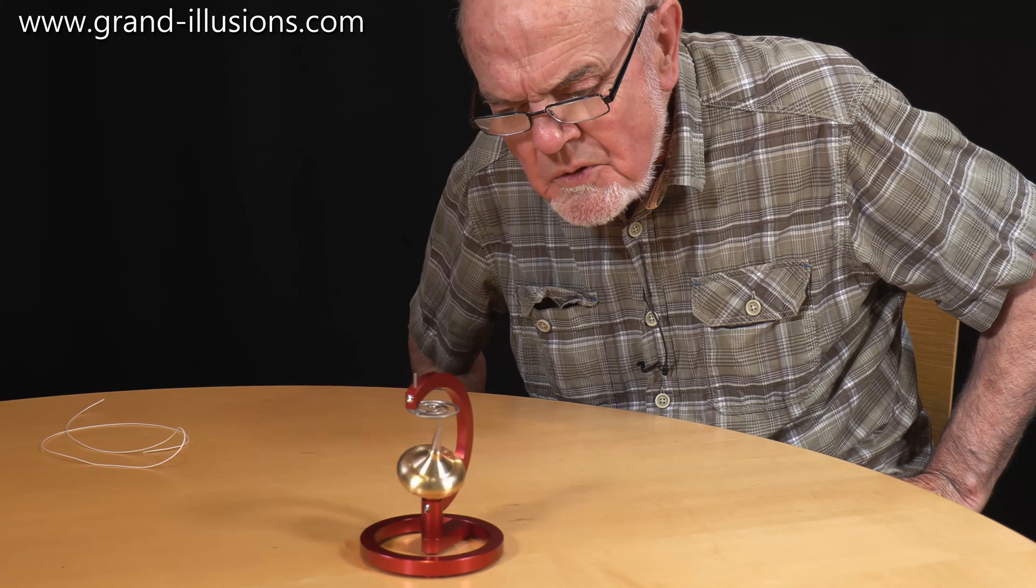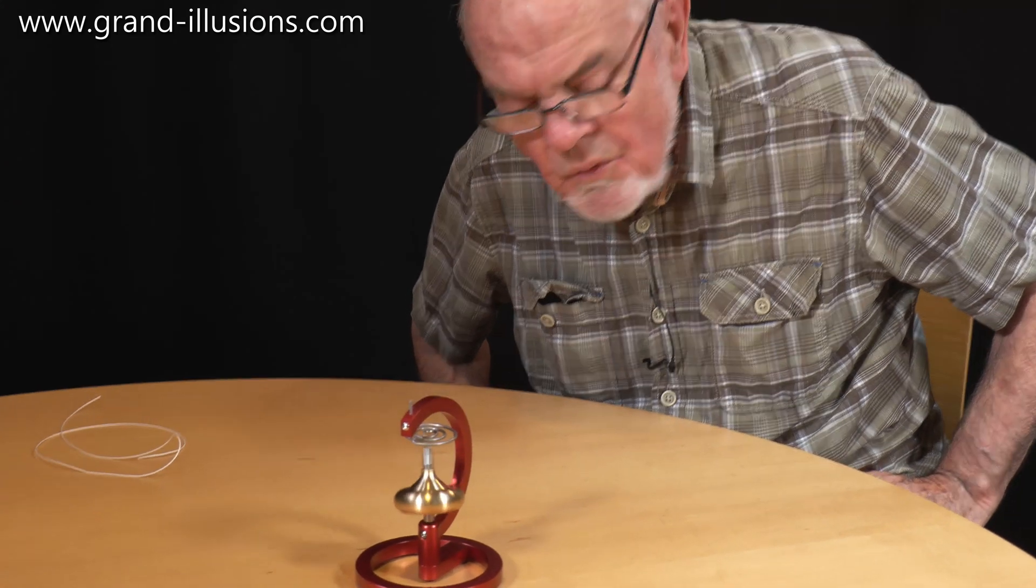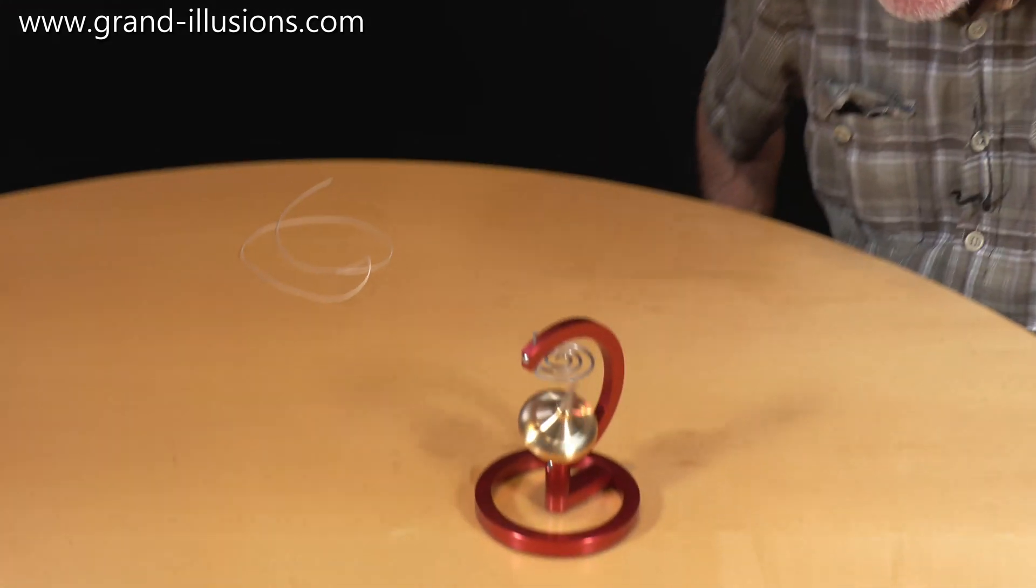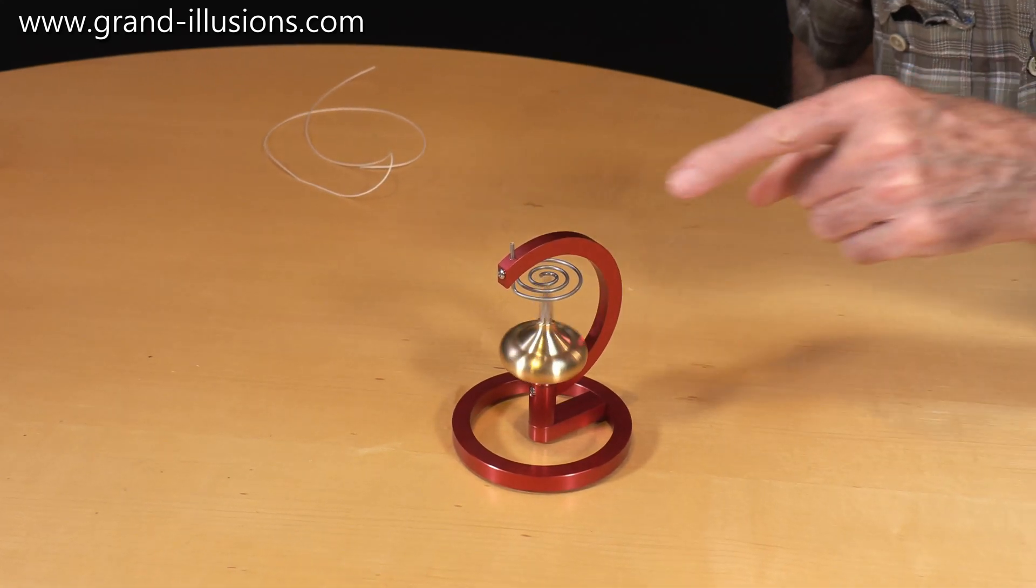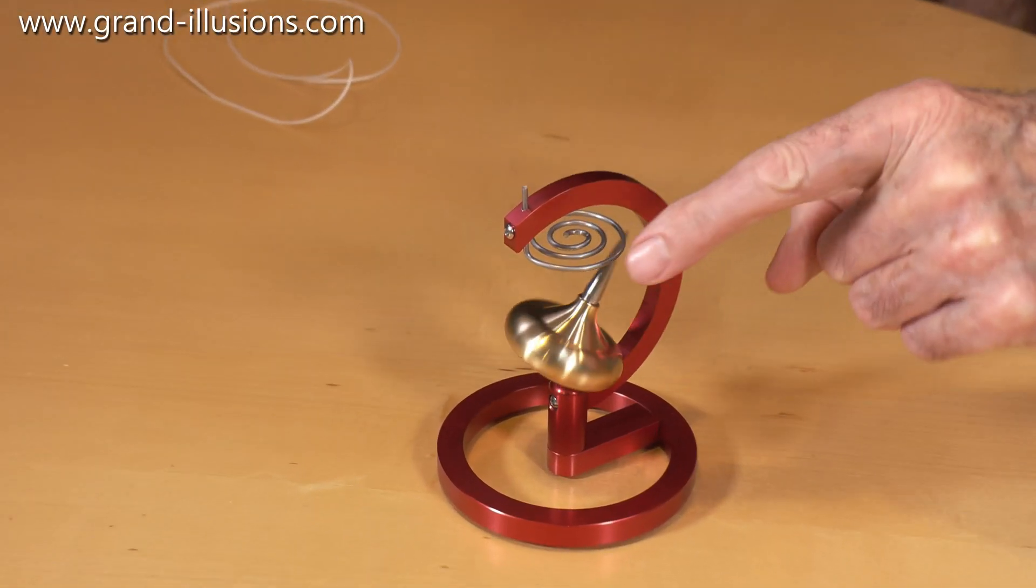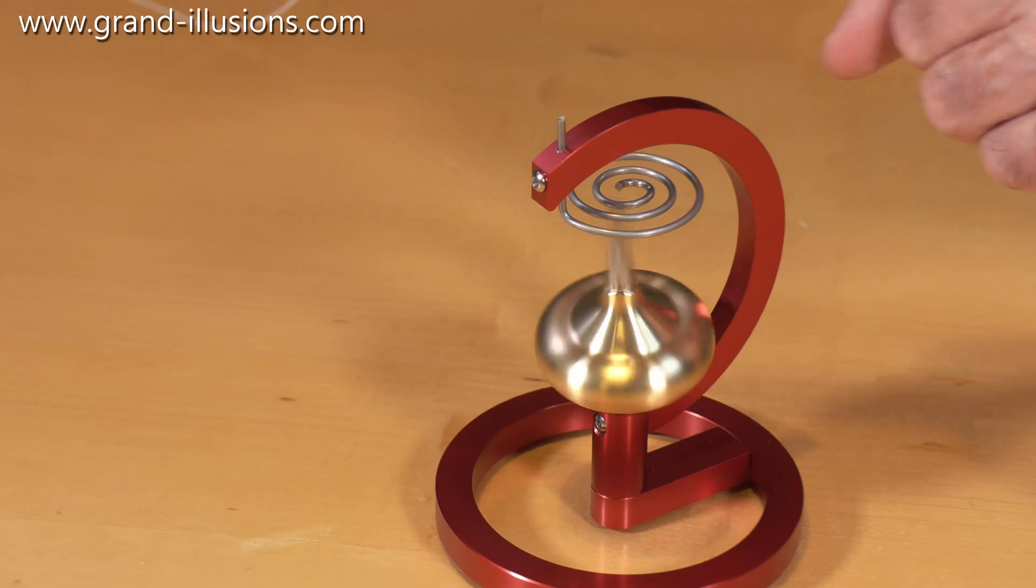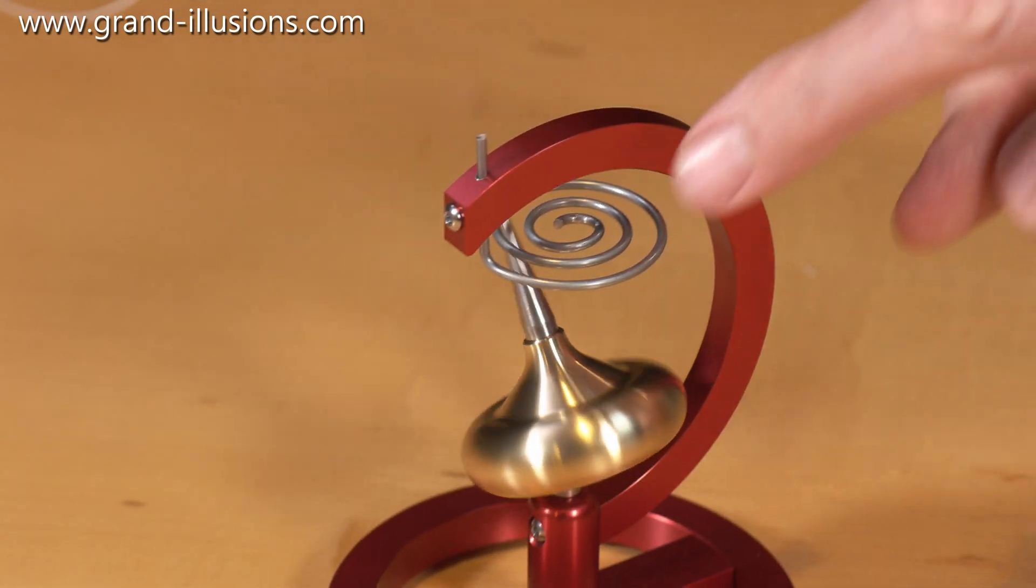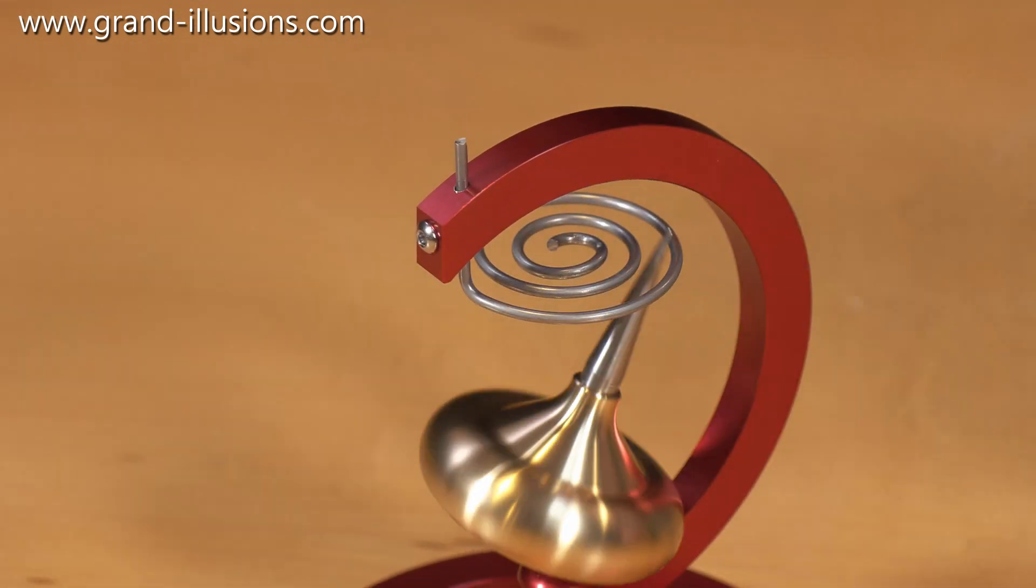It's got an extraordinary motion, and a very extraordinary thing happening. Have a closer look at it and see what you can spot - that it's going on the outside of the wire, then it comes on the inside of the spiral, and then it comes back again on the outside.